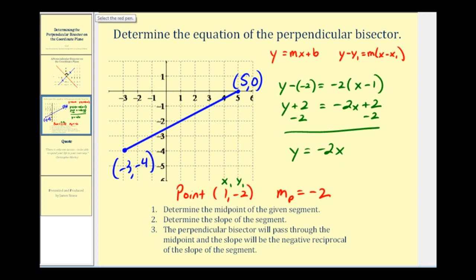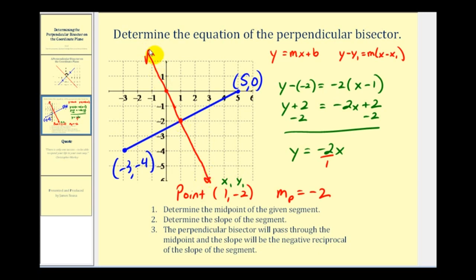Let's graph that and see if it is the perpendicular bisector. We have a y-intercept of zero and a slope of negative two. To graph it, we go down two and right one — notice we're at the midpoint (1, -2) of the segment. So this does bisect it, and the line forms a right angle with the blue segment. The equation of the perpendicular bisector is y equals negative two x. I hope you found this example helpful.